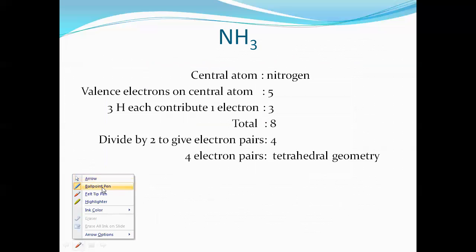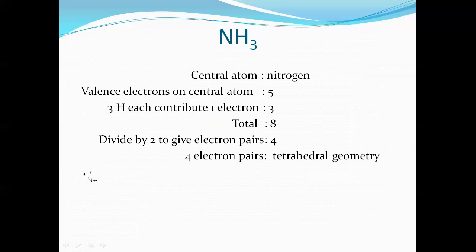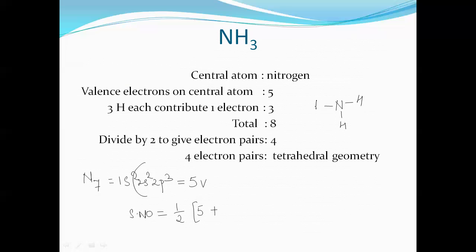When we come to ammonia, the central atom is nitrogen with atomic number 7. The electronic configuration is 1s², 2s², and 2p³. The valence electrons present are 5. Applying the steric number formula: half into (5 + 3) = half into 8 = 4. Nitrogen is attached to 3 other hydrogen atoms, so the number of bonds is 3, and there is no charge.